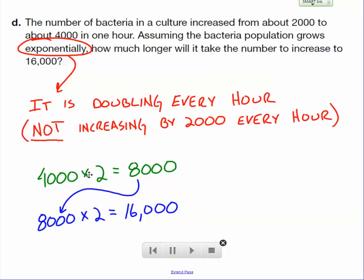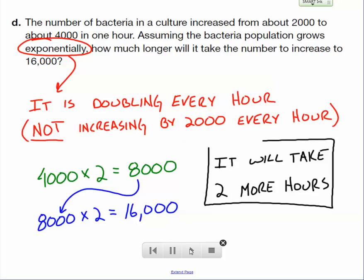So after one additional hour, it was 8,000. After two additional hours, it was 16,000. So here's our answer. It will take two more hours. It took one hour to go from 2,000 to 4,000. And it will take two more hours to get up to 16,000.